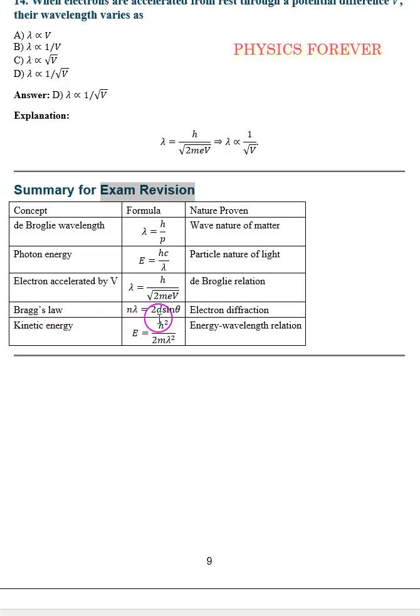Then Bragg's law: n lambda is equal to 2d sin theta, which is electron diffraction. Then kinetic energy is equal to h square by 2m lambda square. That is the energy wavelength relation.